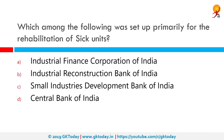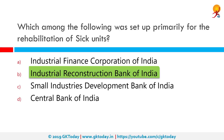Which among the following was set up primarily for the rehabilitation of sick units? The correct answer is the Industrial Reconstruction Bank of India, also known as IRBI. Its function is to provide financial assistance and to revive and revitalize sick industrial units in public or private sectors. An institution called the Industrial Reconstruction Corporation of India was set up in 1971 with a share capital of Rs. 10 crores.